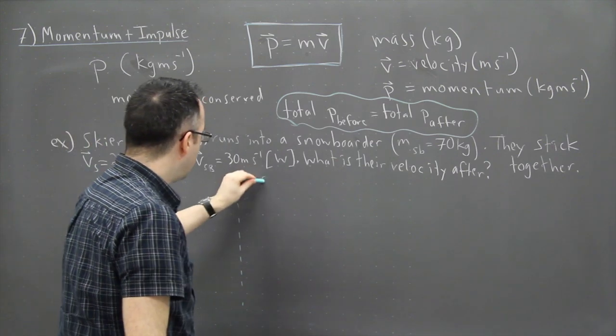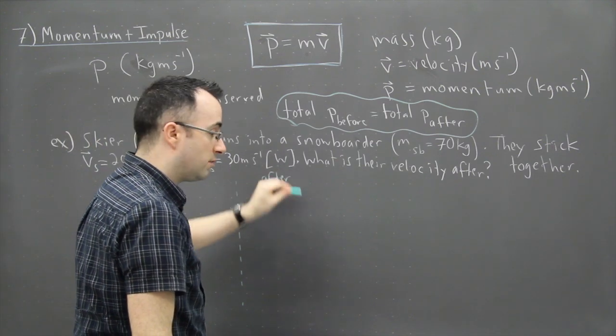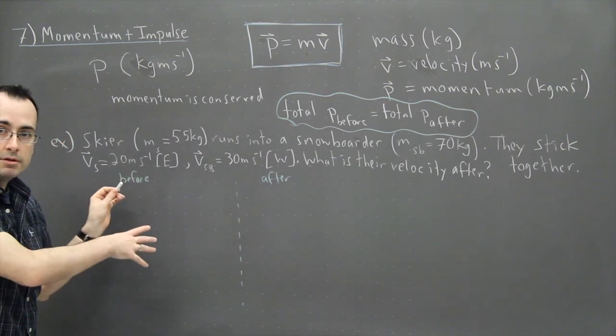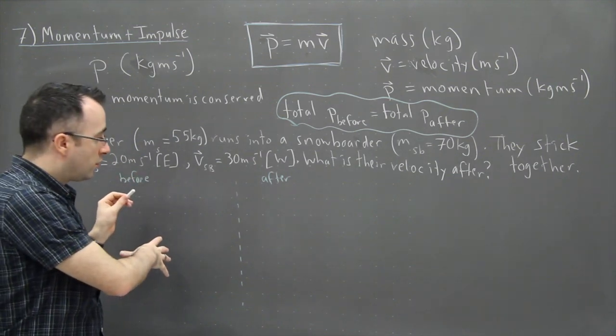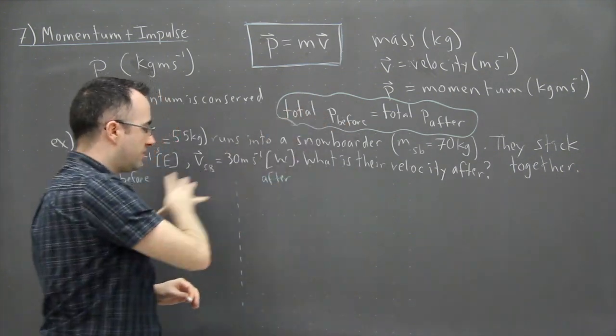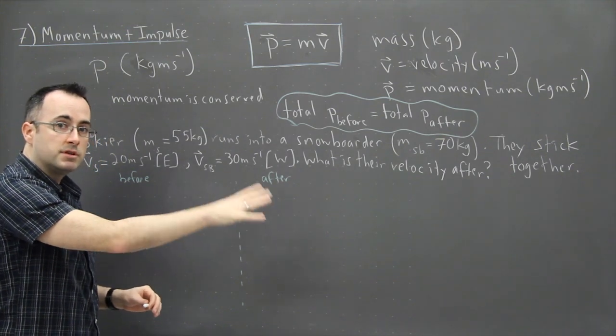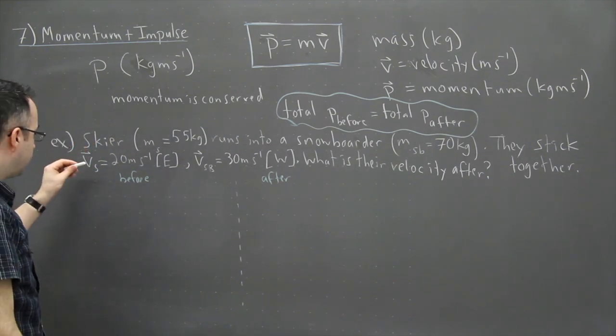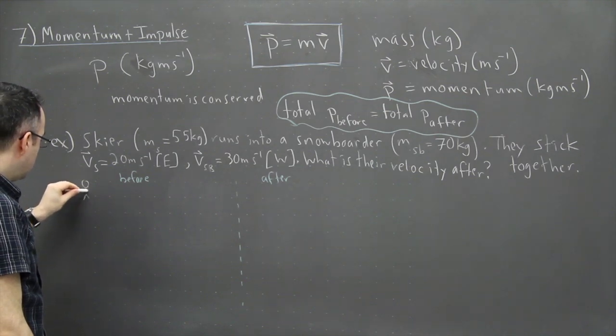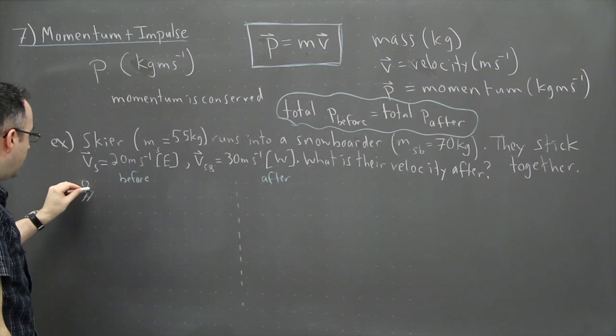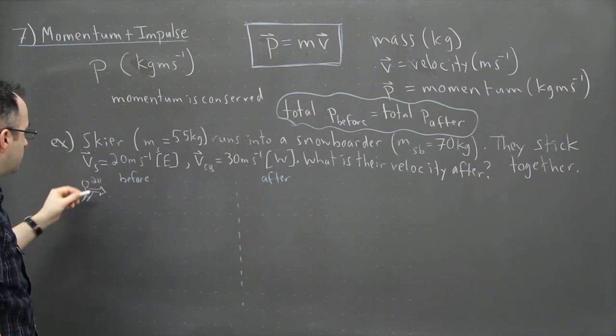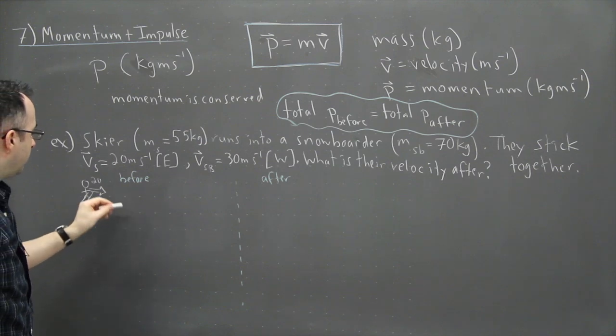So before we have this certain situation and after we have another situation. The key thing is that we're going to have to find the momentum, the total momentum before, and we're going to set that equal to the total momentum after because of this. This is the only thing that's sort of allowed to cross this line before versus after. So with my skier here, so I've got this person here on their skis. Well, they've got their skis here and they've got their velocity of 20 meters per second going that way. And we've got the snowboarder then. They're on a snowboard and they're going with a speed of 30.